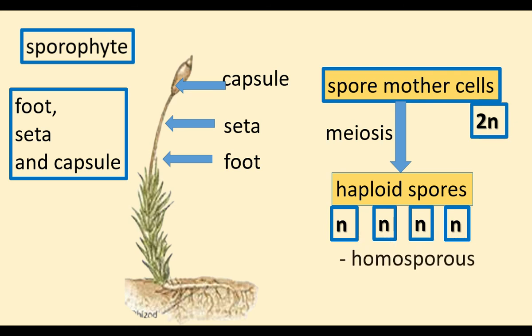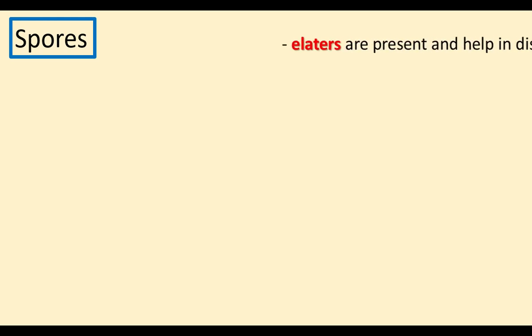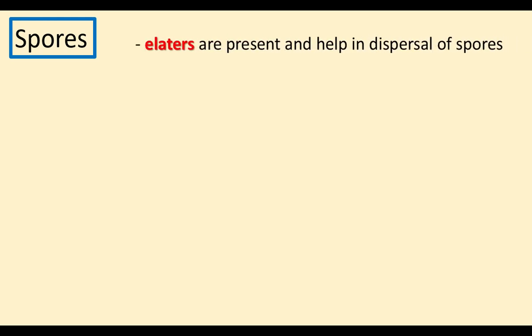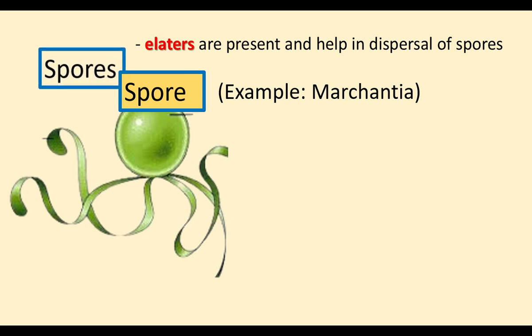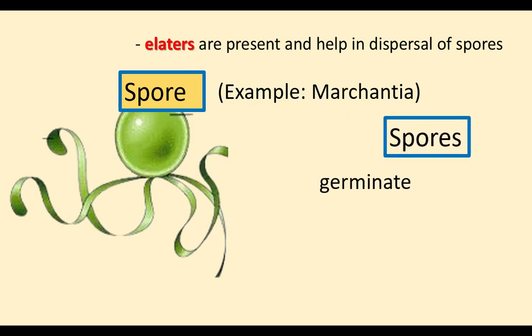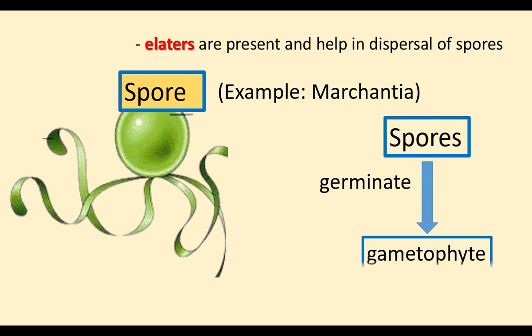These spores are homosporous — in bryophytes, only one type of spore is produced, so bryophytes are homosporous. The spores are liberated and the next generation begins. Spores are dispersed by elaters. Some sporophytes produce elaters that help in spore dispersal. The spores then germinate and develop into a gametophyte.